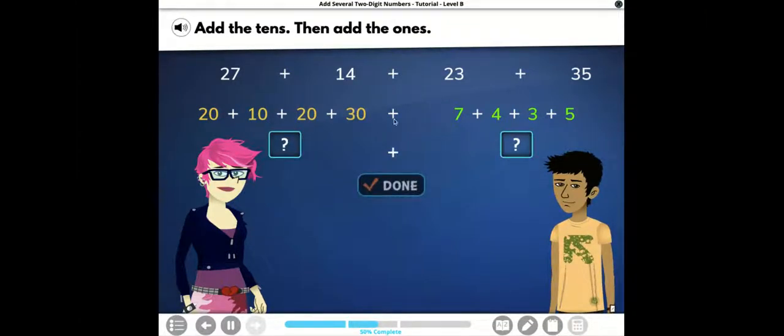All right, boys and girls, let's see. 20 plus 10 is 30. 30 plus 20 is 50. 50 plus 30 is what? 80. Now we come over to the ones. 7 plus 4 plus 3 plus 5. I notice I found a group of tens. 7 plus 3 is 10. 10 plus 4 is 14. 14 plus 5 gives me 19. Sweet.